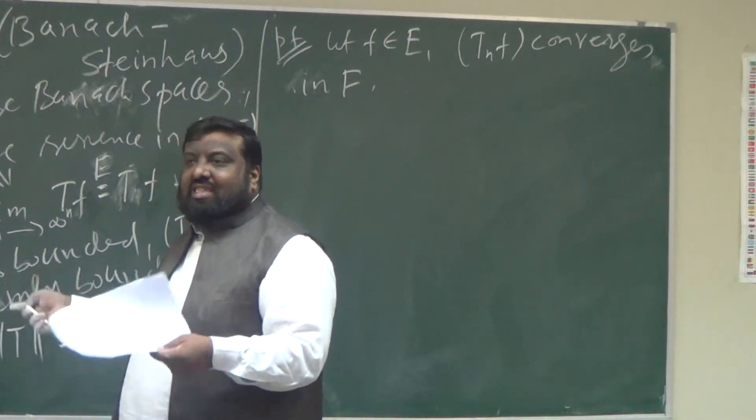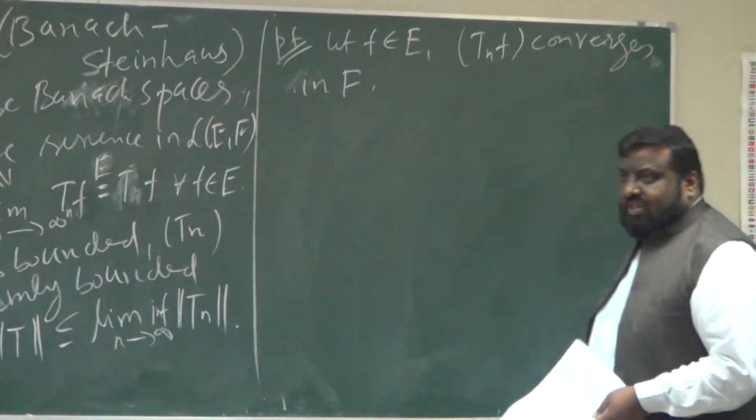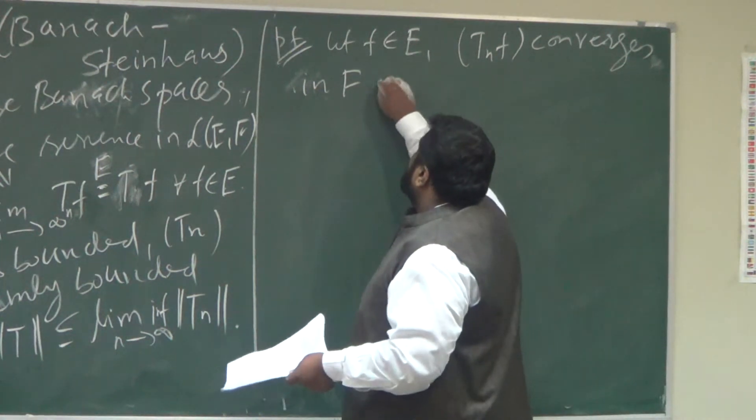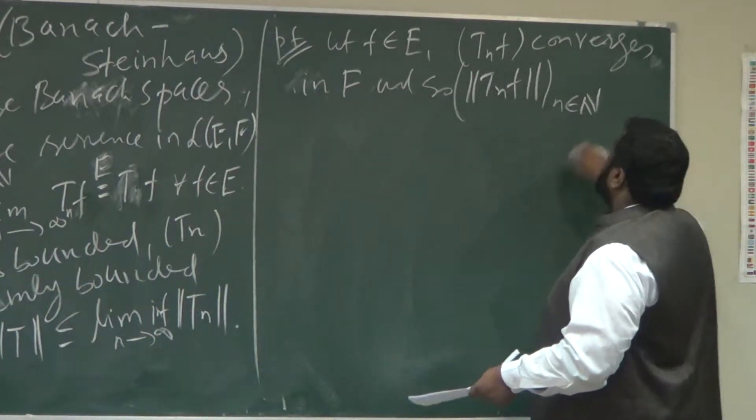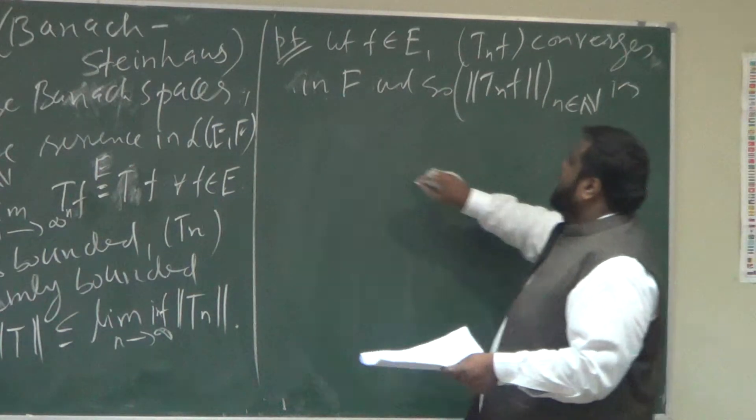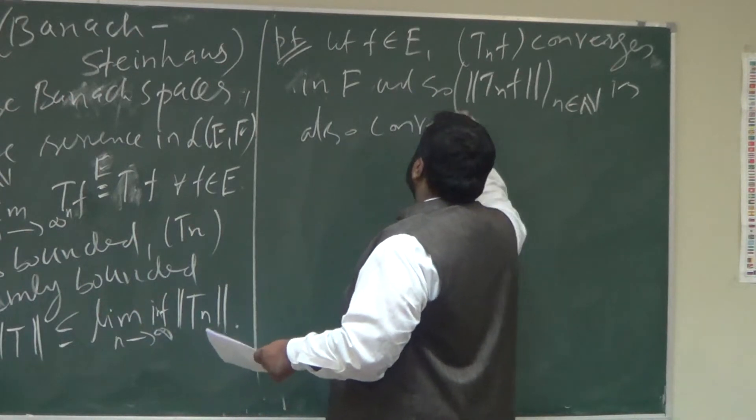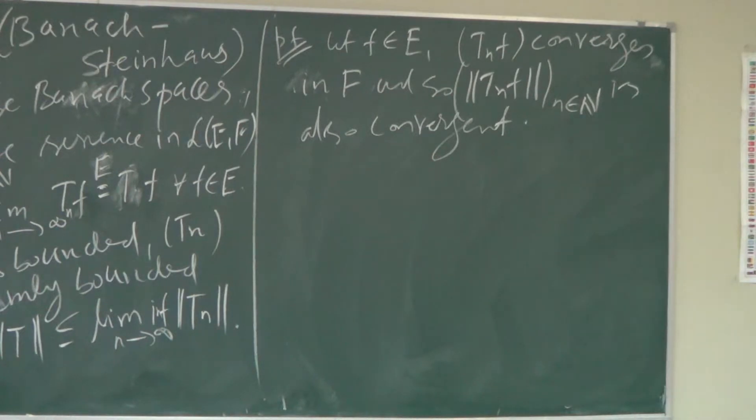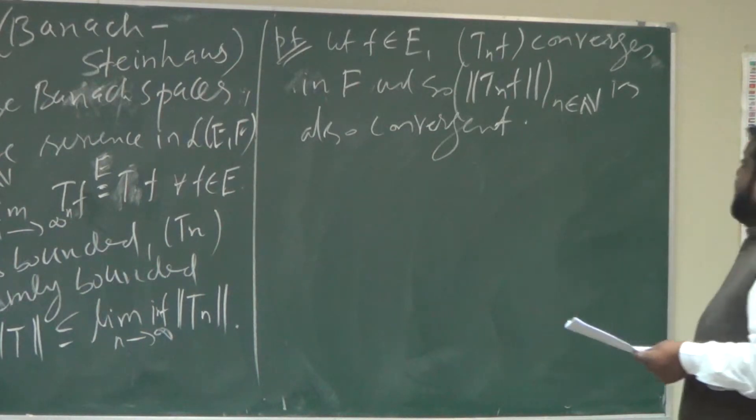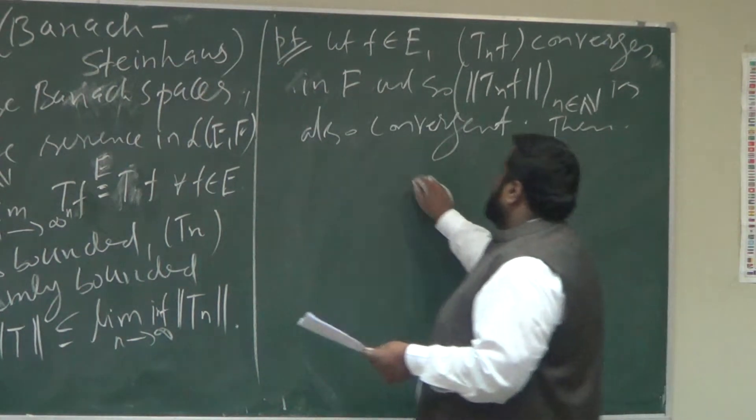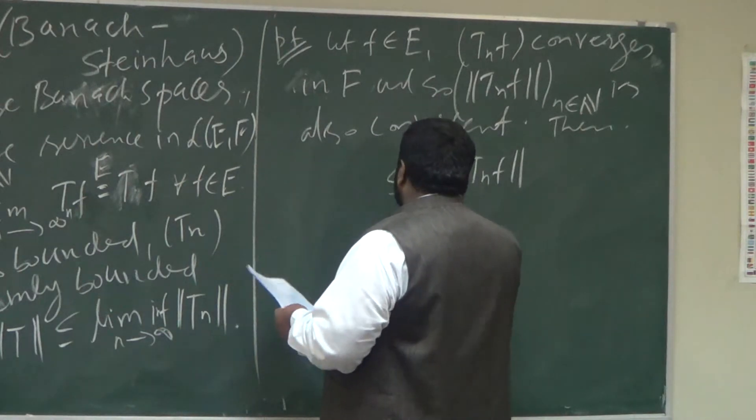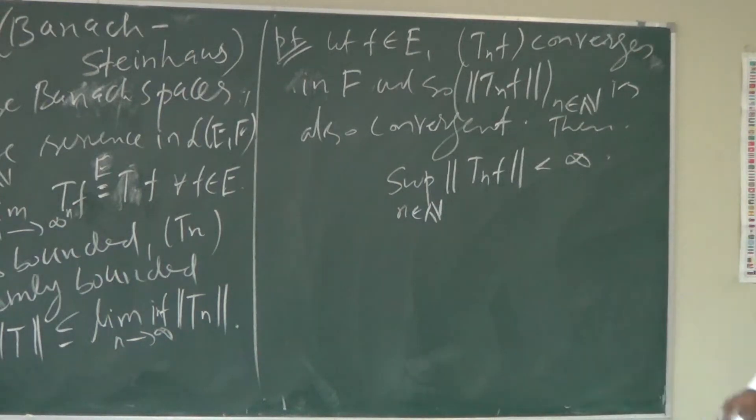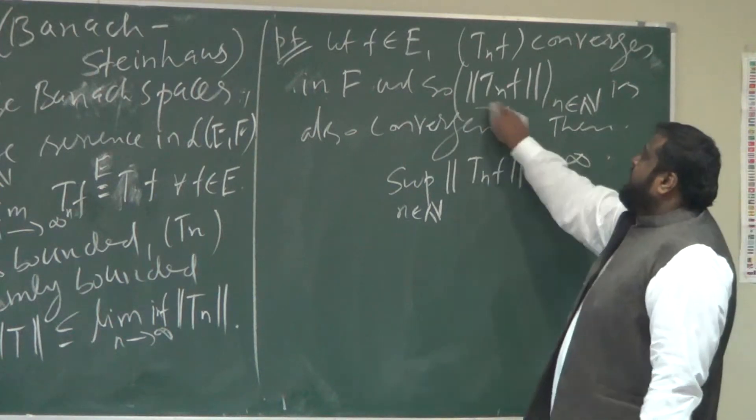So every convergent sequence is also absolutely convergent. So absolute convergence and convergence are equivalent in Banach spaces. That's what we did yesterday as well. And so the norm of Tn F sequence, like this sequence of real numbers is also convergent. If this is the case, then supremum of Tn F where N is in N, it's finite. Why this must be finite? Convergent sequences are bounded.